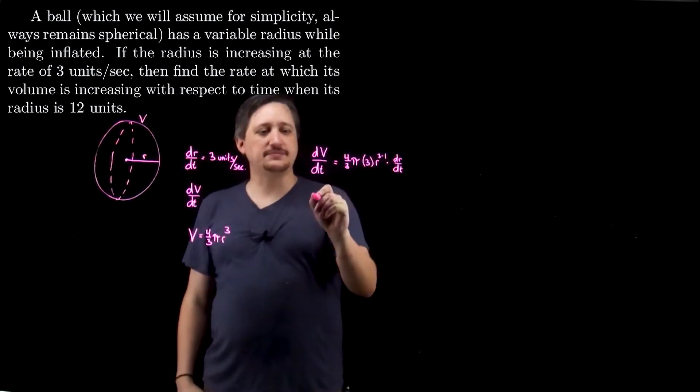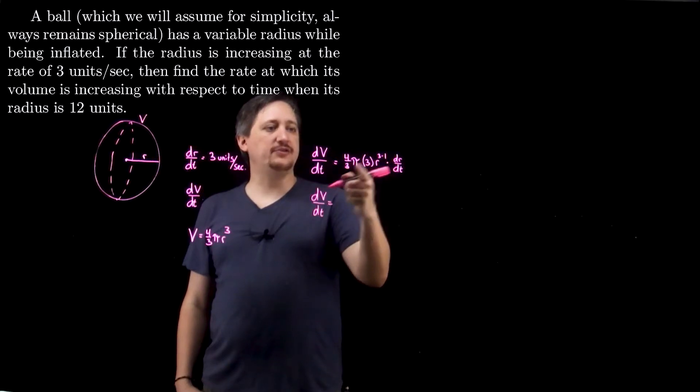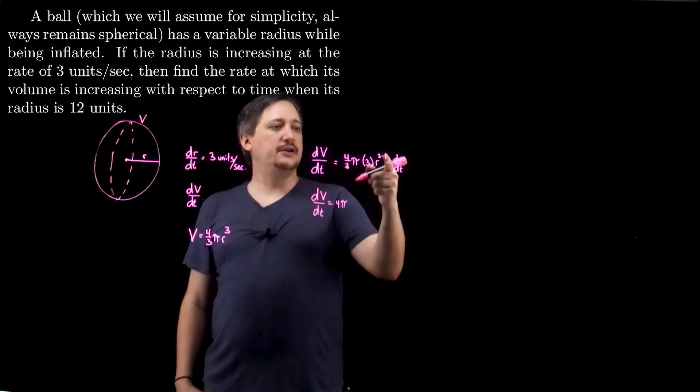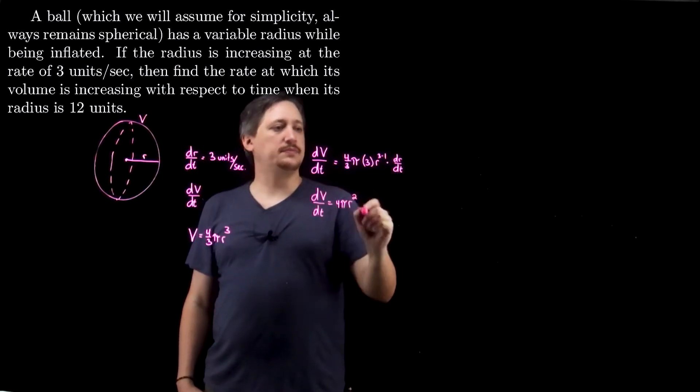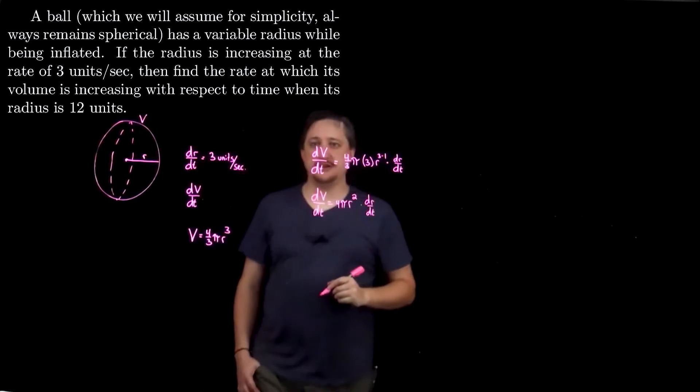So I want to make sure not to plug in any information until after I've taken my derivative step. So now I can clean this up a little. dV/dt. So 4/3 π times 3, so the 3's cancel, so that's going to get me just 4π. Here, r². And then here, I still have my dr/dt.